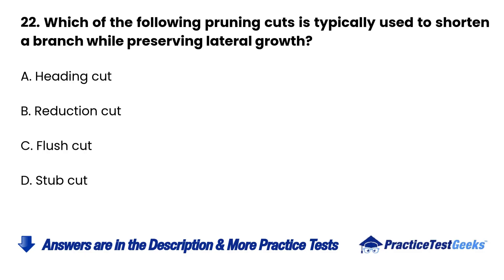Question 22. Which of the following pruning cuts is typically used to shorten a branch while preserving lateral growth? A. Heading cut. B. Reduction cut. C. Flush cut. D. Stub cut.